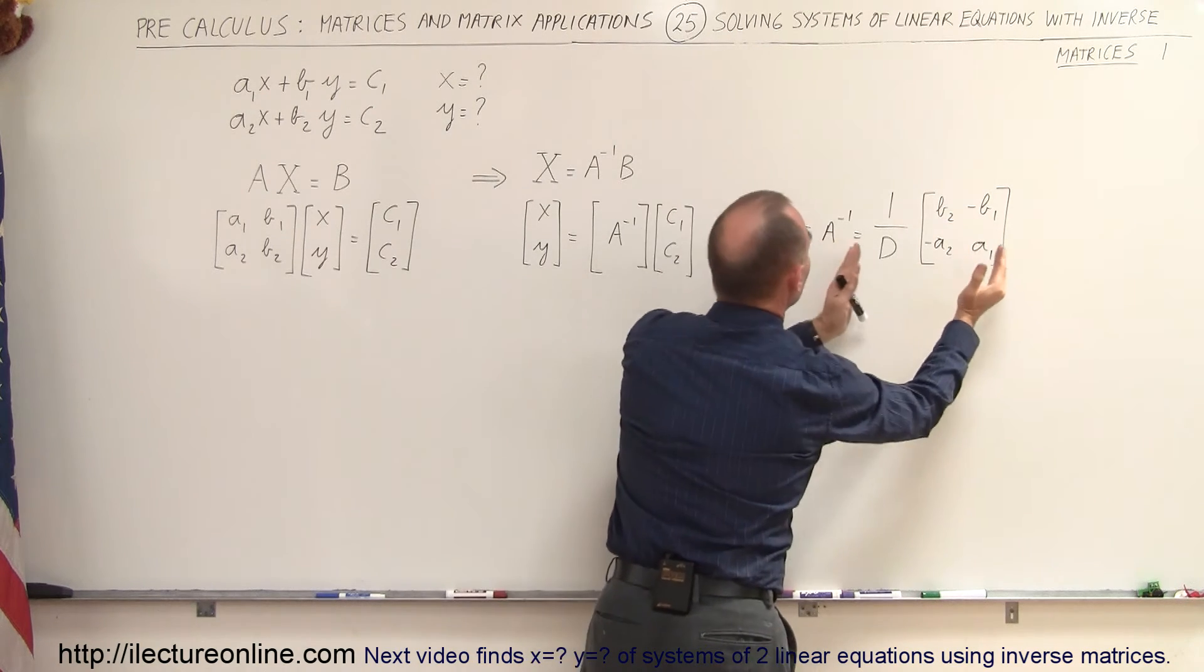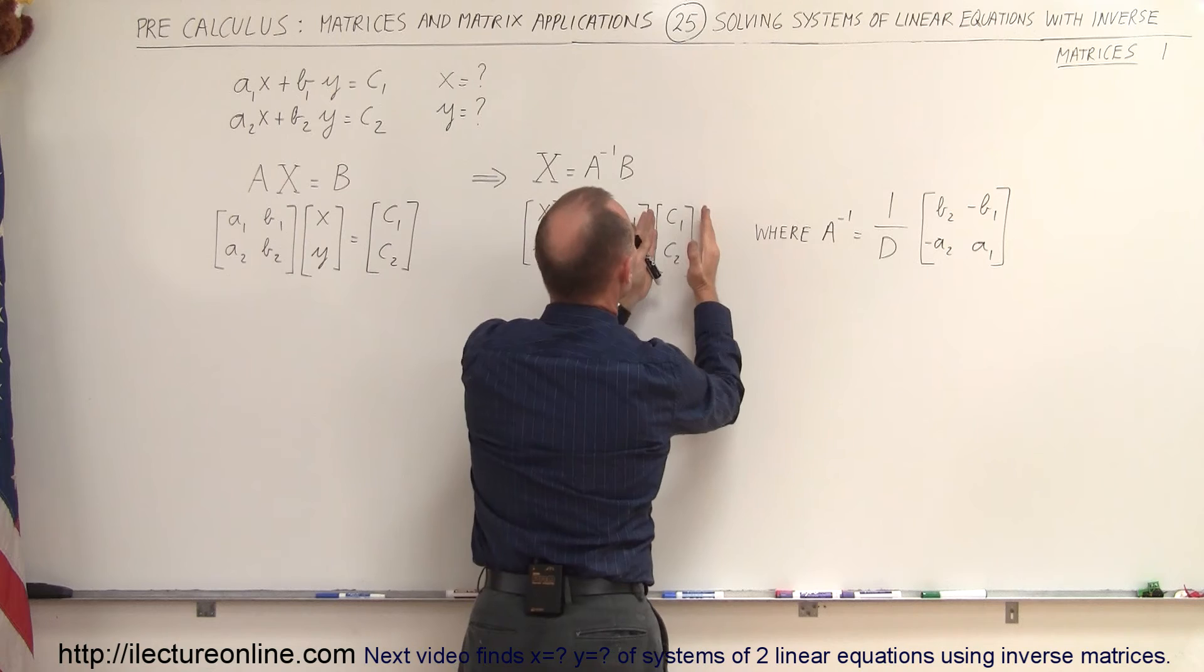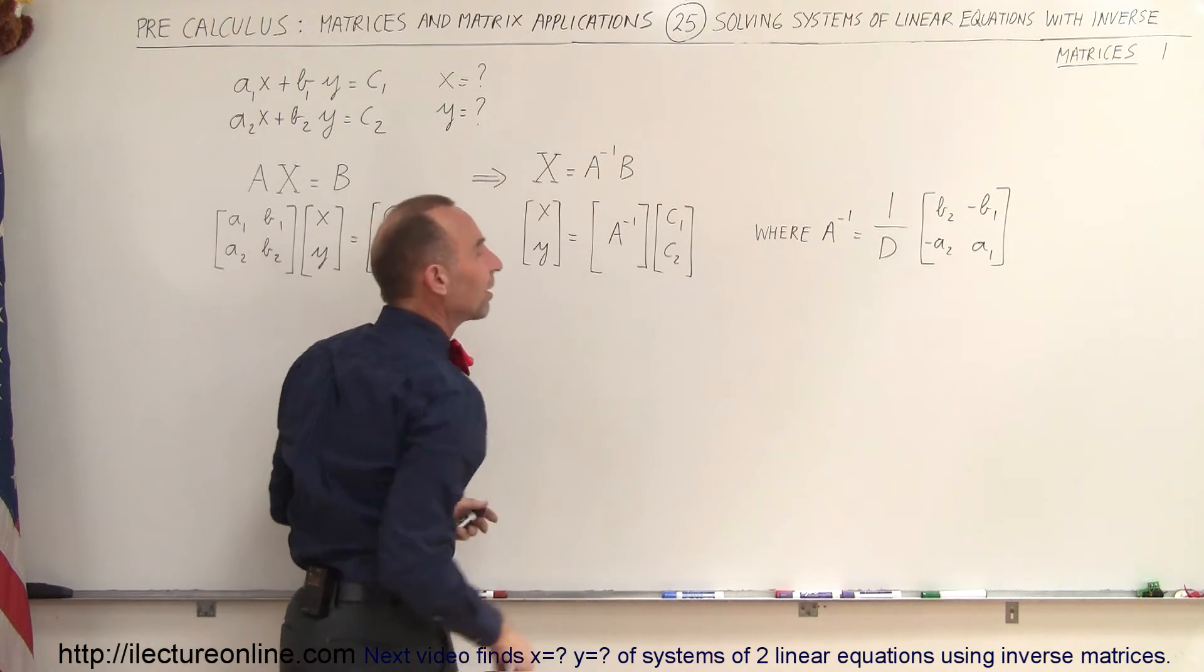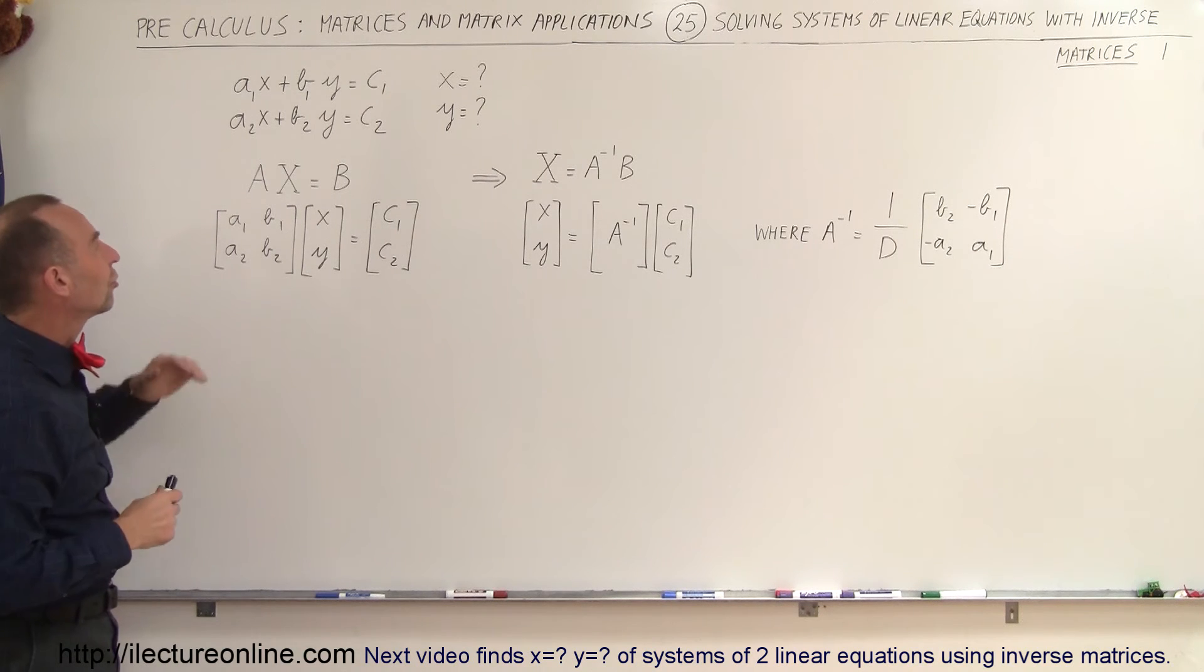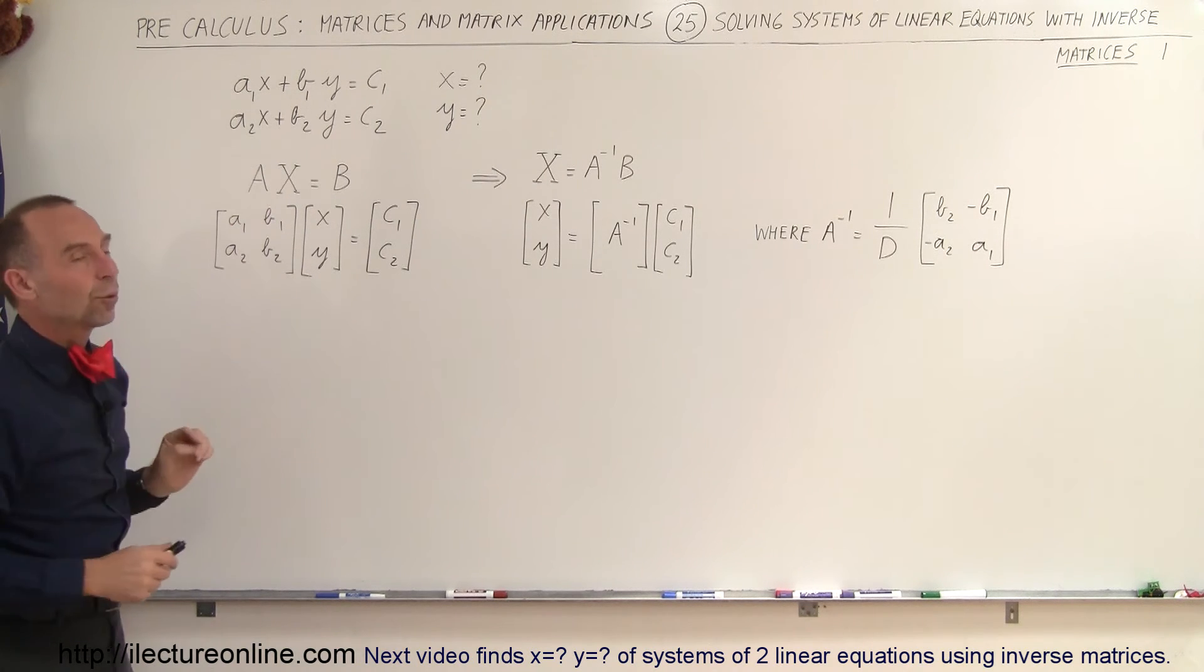we can then simply take this, plop it in here, multiply times the B matrix, and we get the values for x and y. And that's how we're going to find the solutions to systems of linear equations.